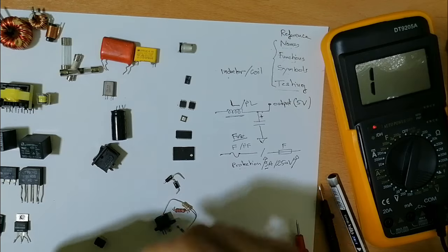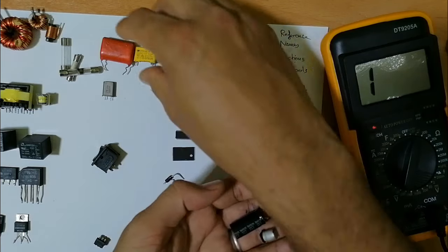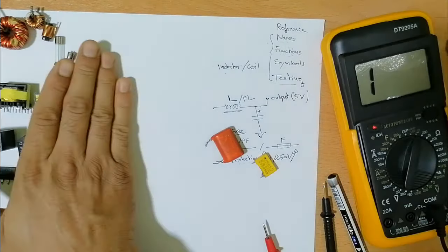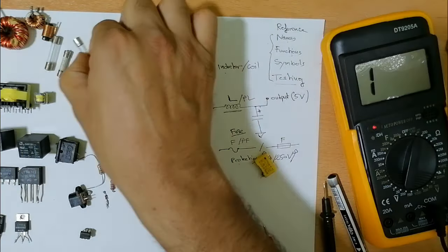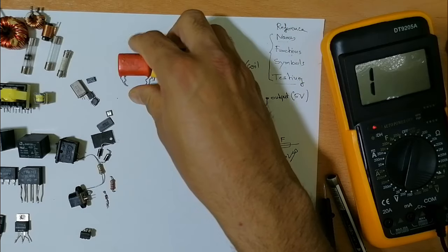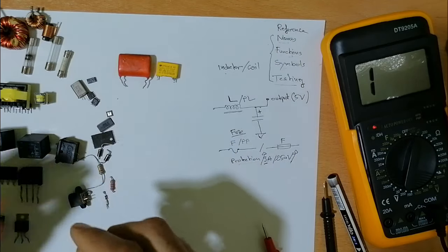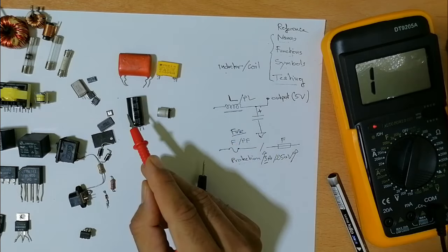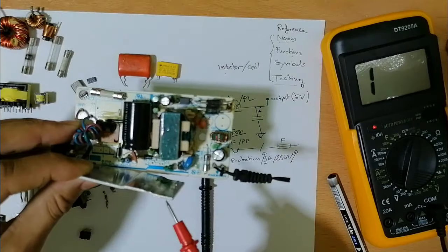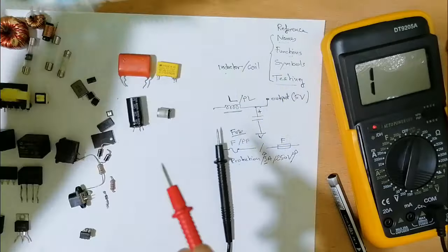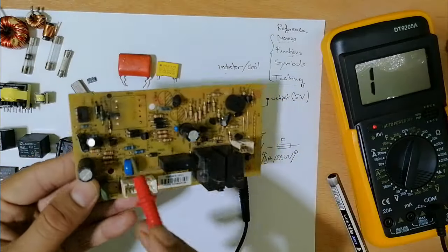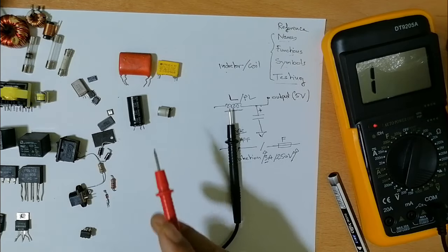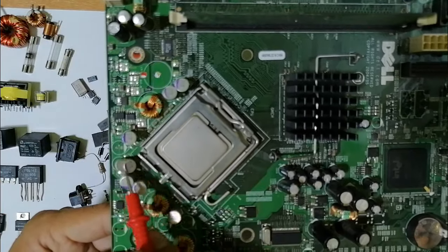Now let's look at capacitors. We have many capacitors here — basically two kinds: ceramic capacitors and electrolytic capacitors. The electrolytic capacitors we find in switch mode power supply boards, and the ceramic kind we find in motherboards.